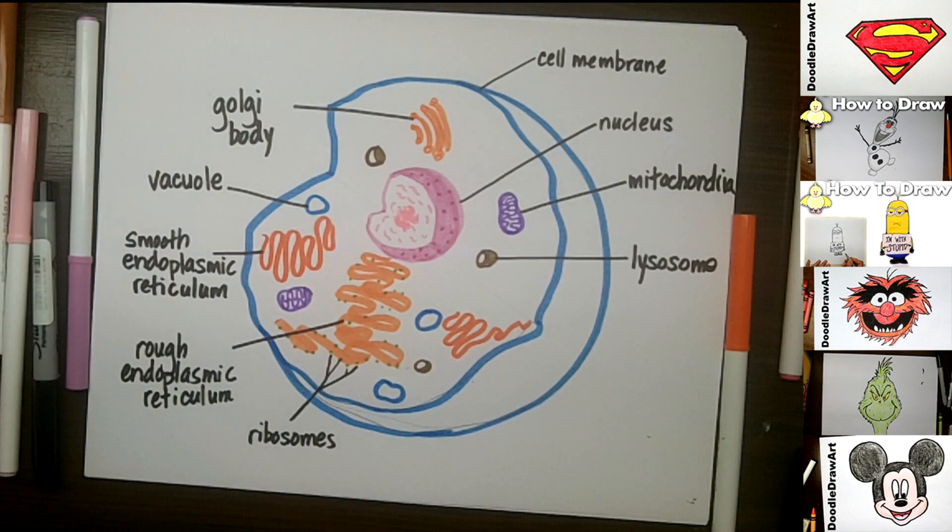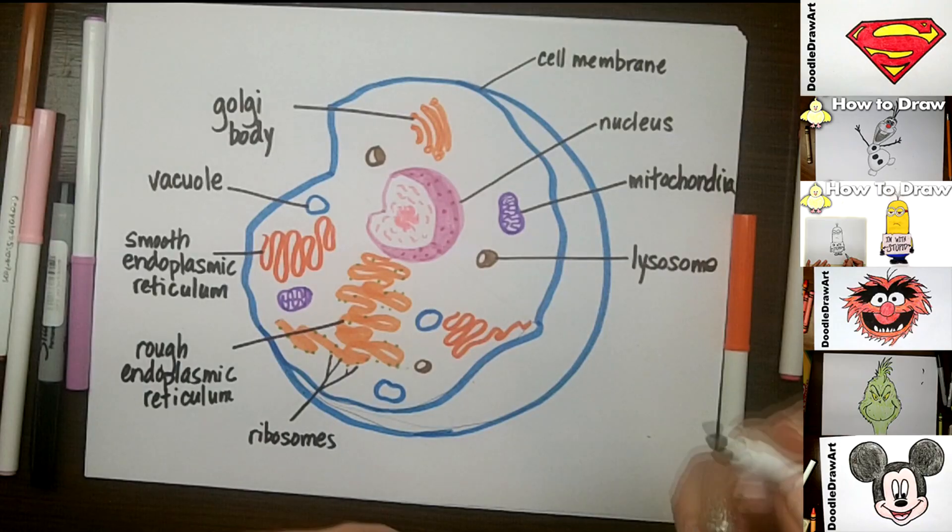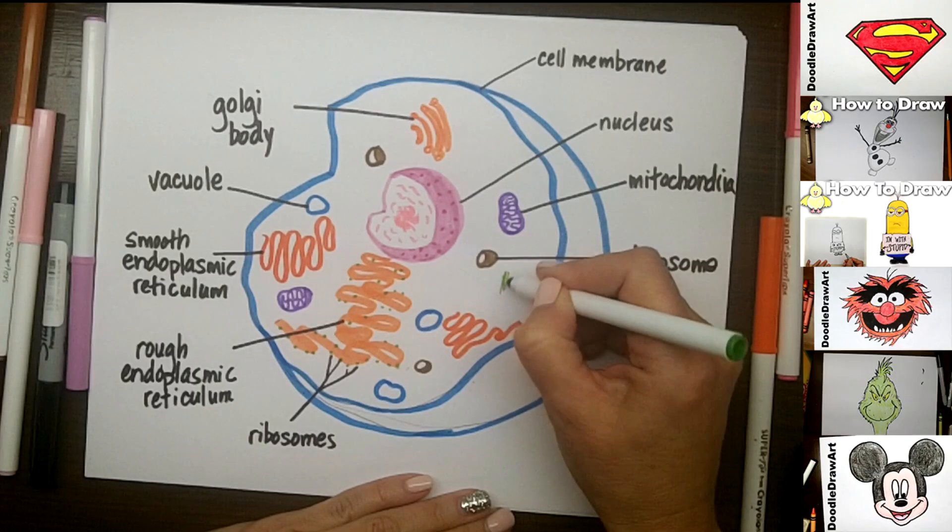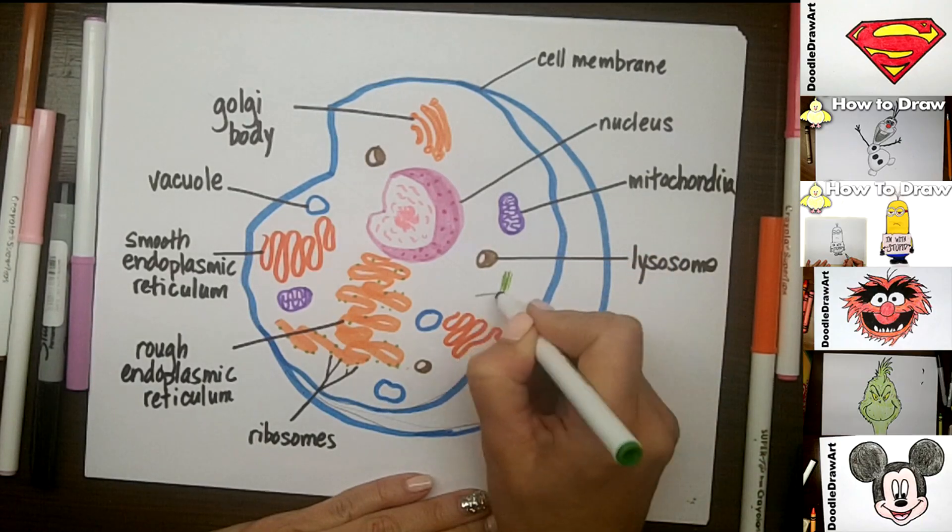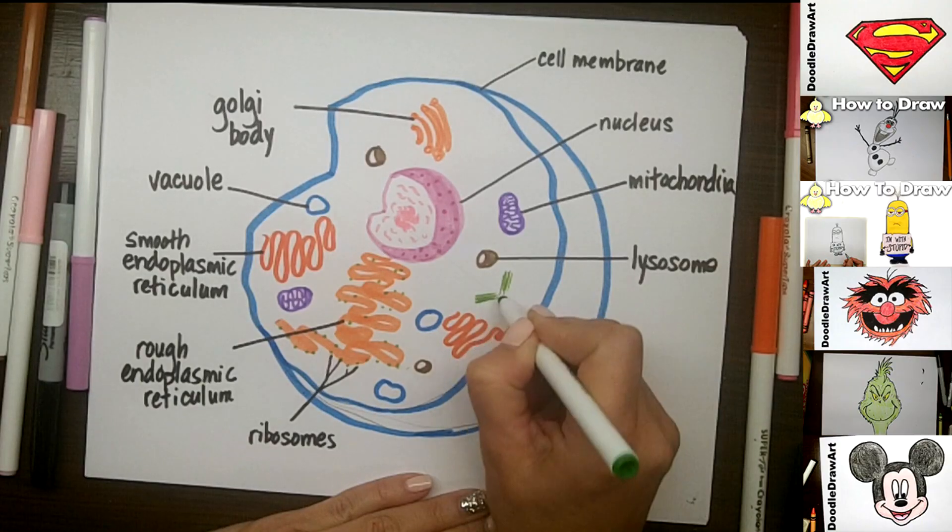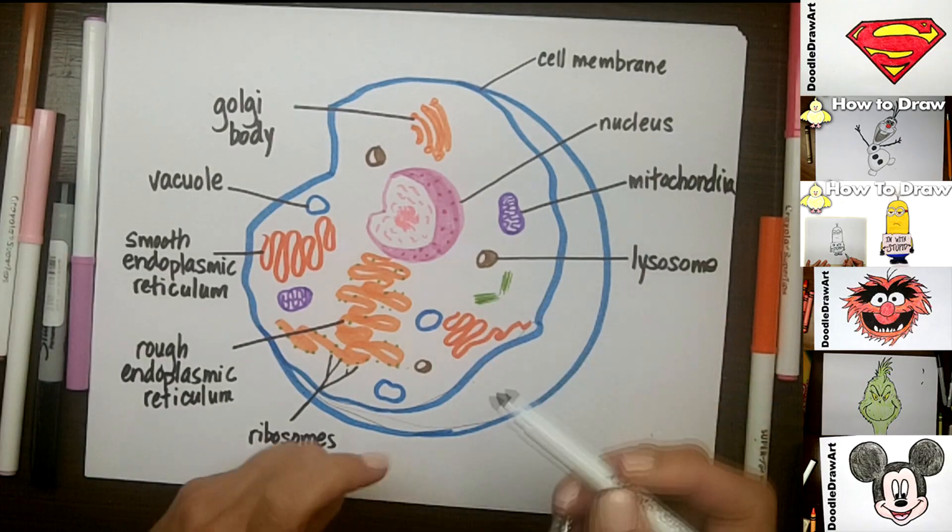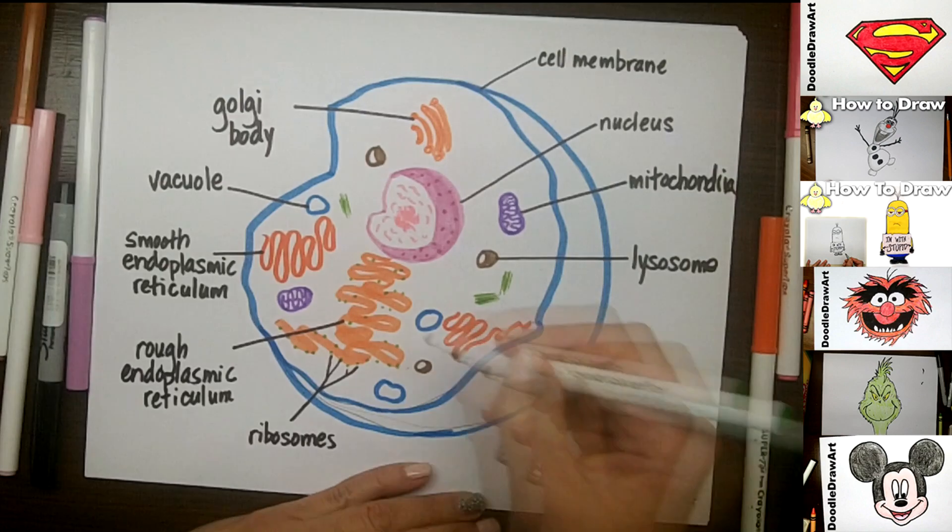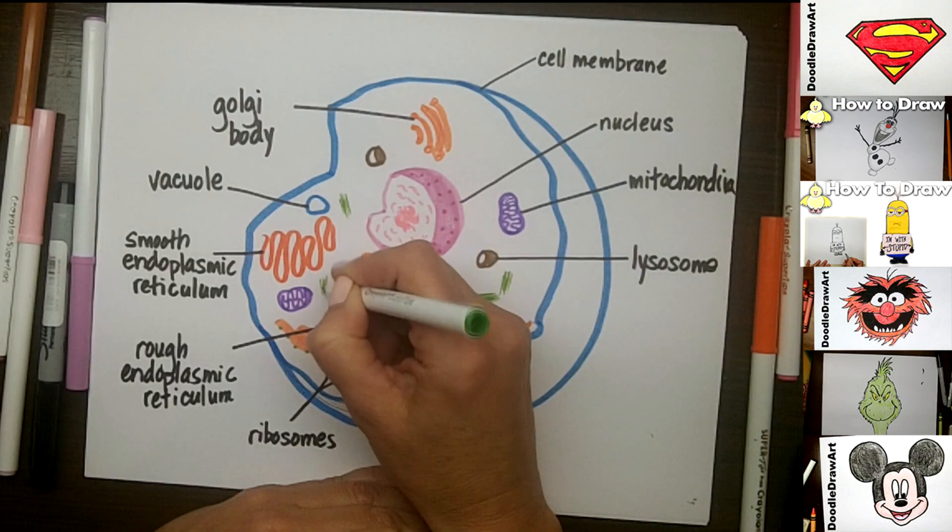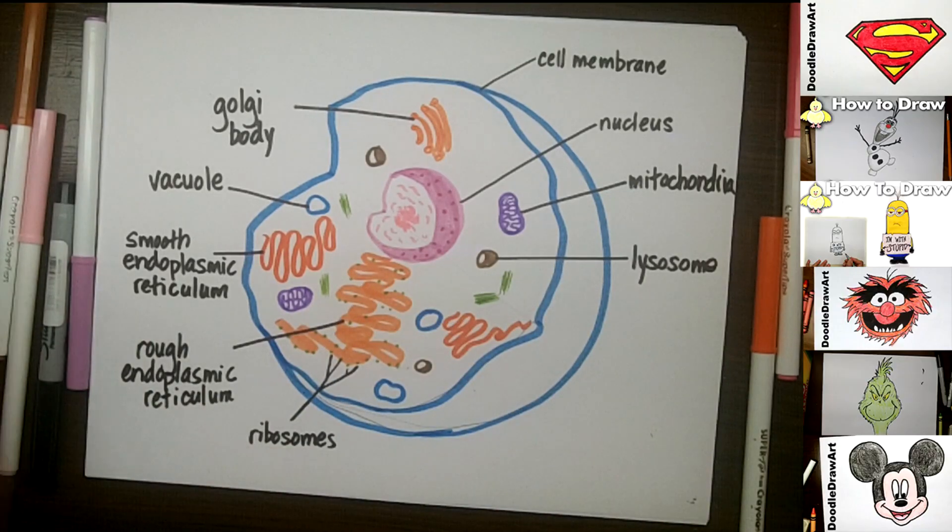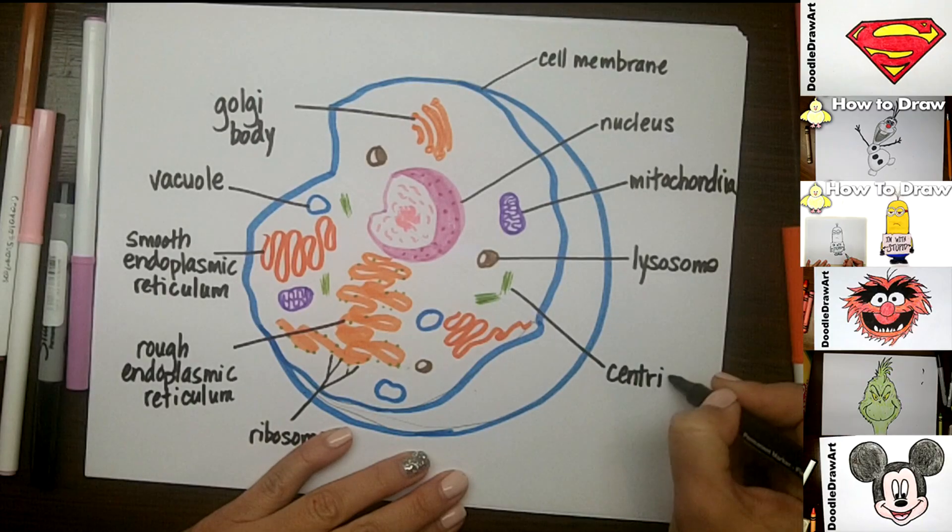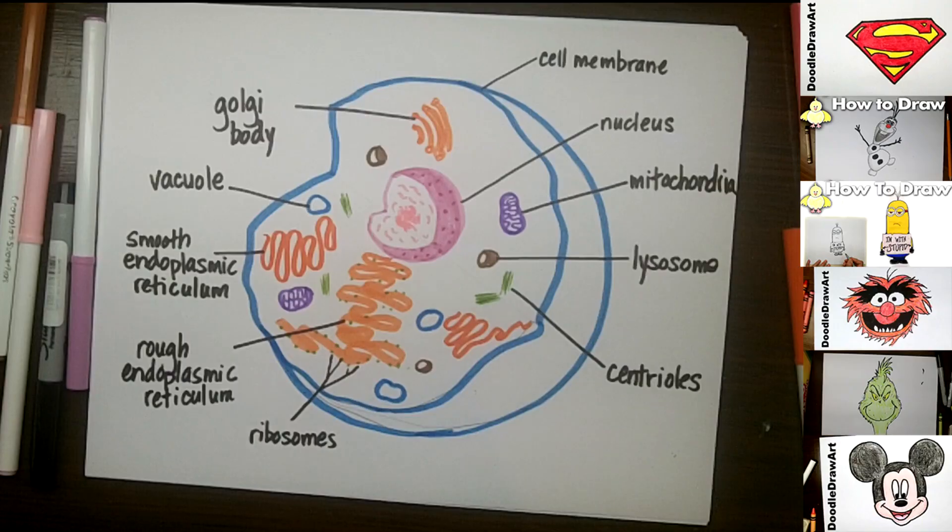And then the last thing that we would have in the cell is the centrioles. So we have these centrioles and they are like little tubules and if there's more than one, they'll just lay in angles to each other. So I always think these look like licorice candy, the black ones that have like a whole bunch of little tubes all laying together. So these are just centrioles. I'll draw one over here. Awesome.